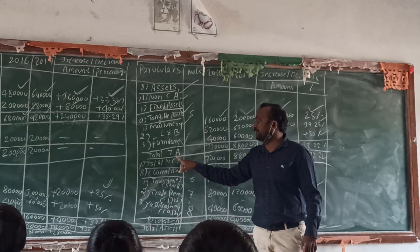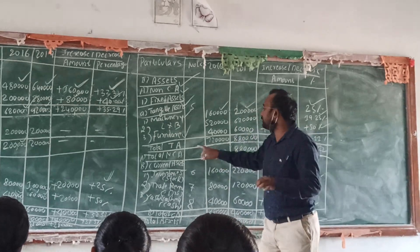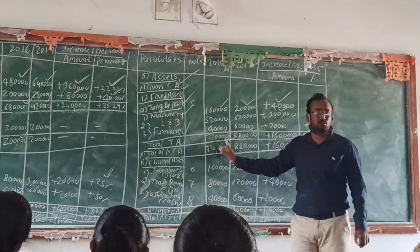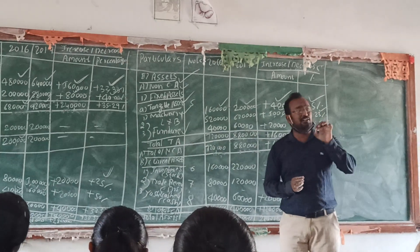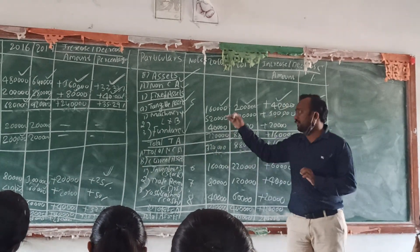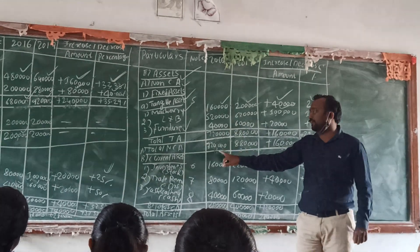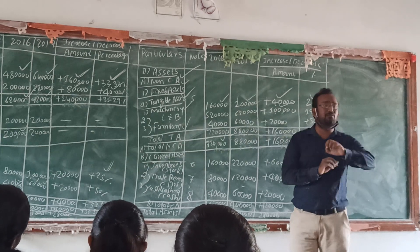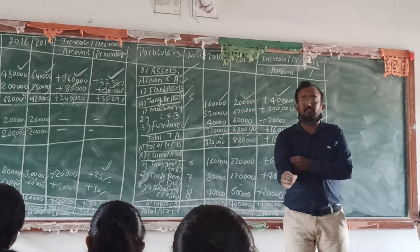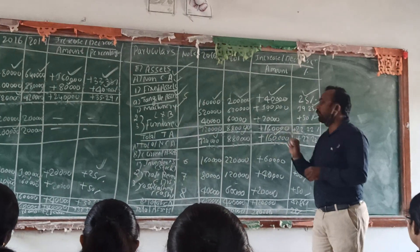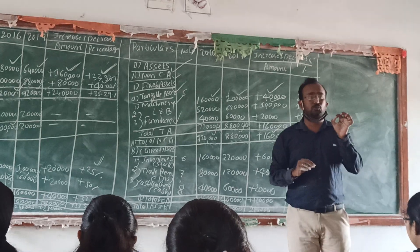Now we can see the total tangible assets. The first year total is 7,20,000 and the second year is 8,80,000. The difference is 1,60,000 and the percentage is 22.22%.